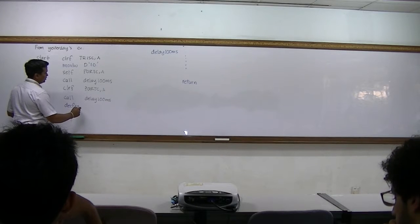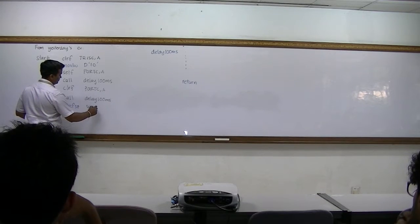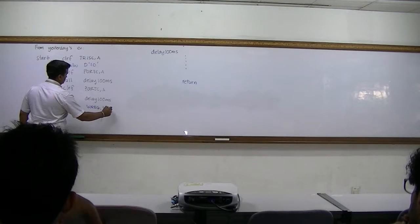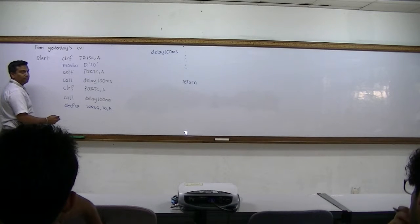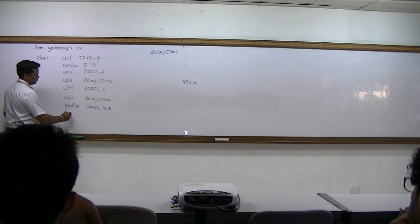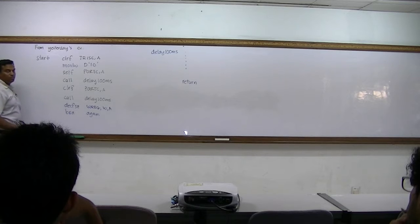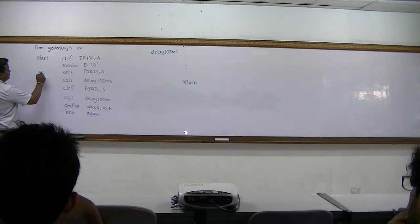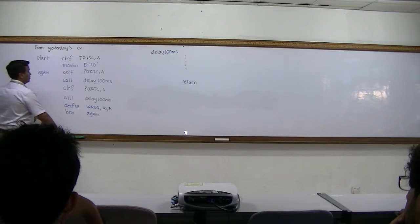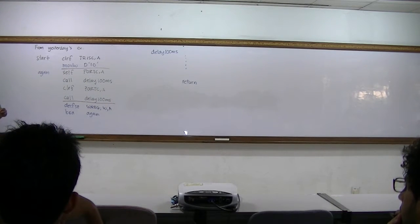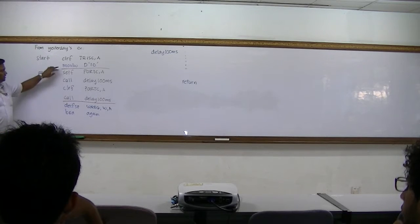Decrement the file register, skip if zero. If it's zero, you skip. If it's not zero, you run — you go again. This is the task that we want to do ten times, and this is actually the loop counter.